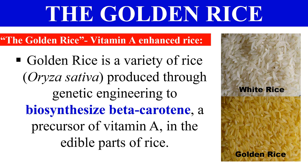And why is it called golden rice? Due to its color. As you can see in the picture here, golden rice is yellow in color. This yellow color is developed due to the beta-carotene, because we introduced the genes for beta-carotene, so the color of this rice turned yellow. That's why the name given to this rice is golden rice.